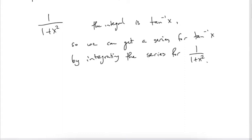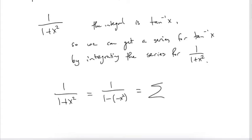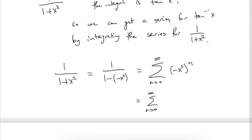First we find the series for 1/(1+x²). We think of it as 1/(1-(-x²)), then plug -x² into the geometric series formula instead of x. This gives the sum from n=0 to infinity of (-x²)^n, which simplifies to the sum of (-1)^n x^(2n).